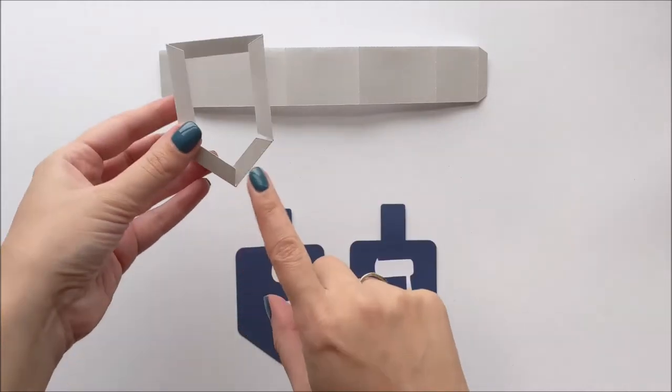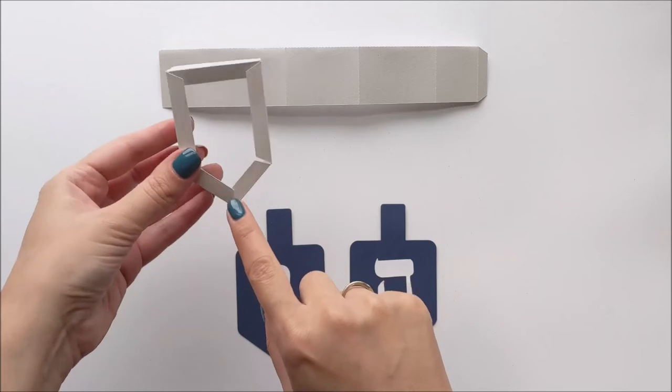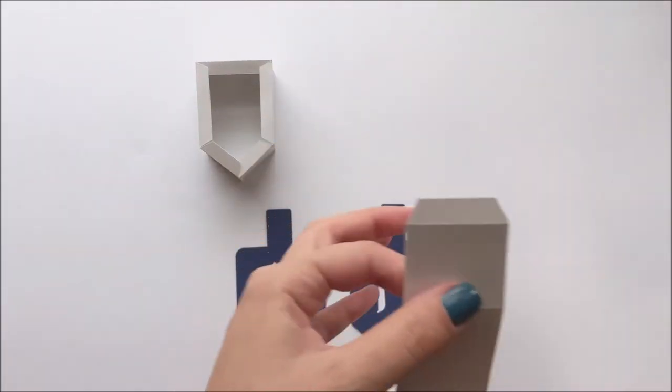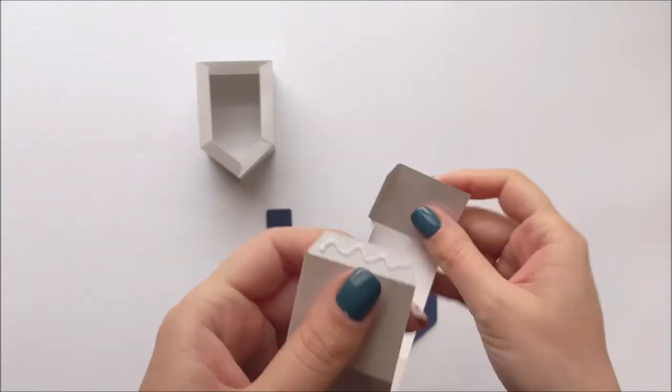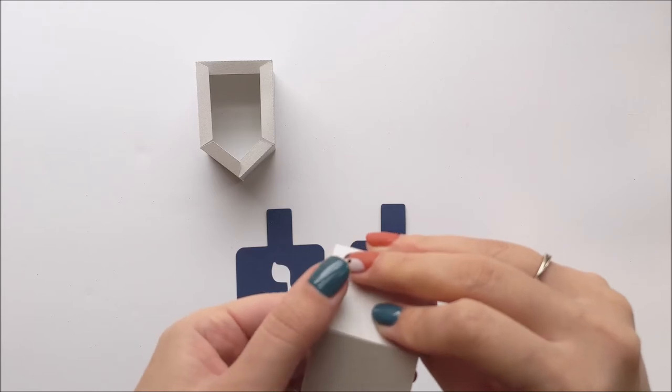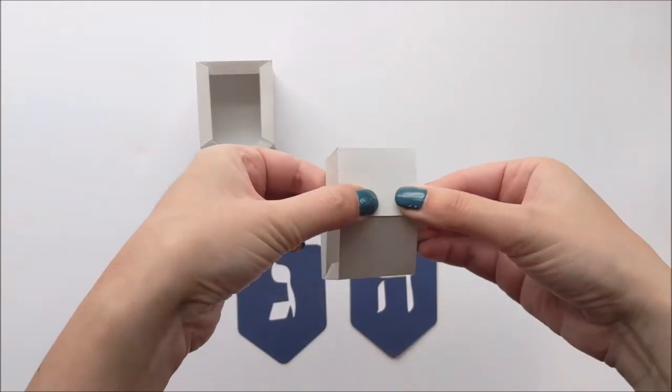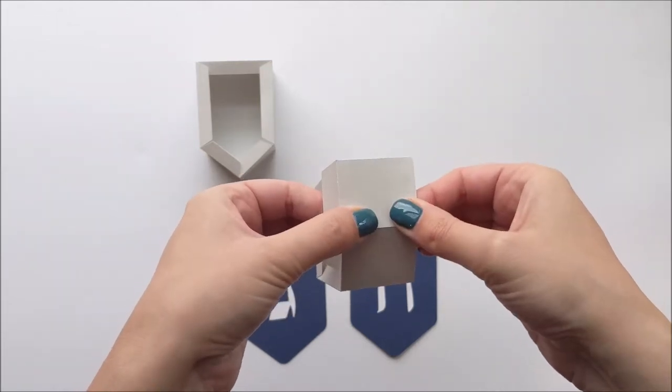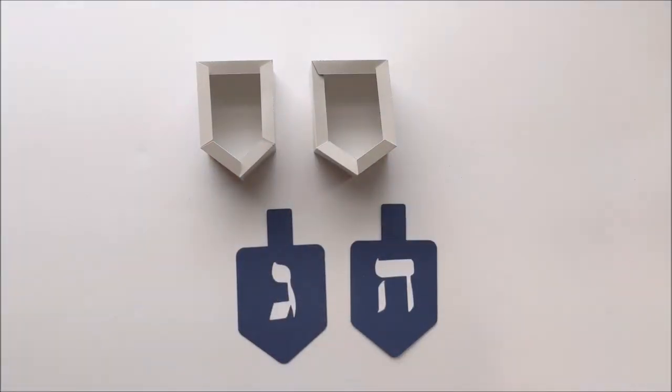Where the two sides meet, that's gonna be the bottom point of your dreidel. So here's where I glued it together, that's the bottom point. And I'm just gonna repeat that with the other box.